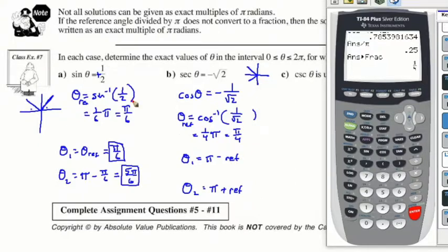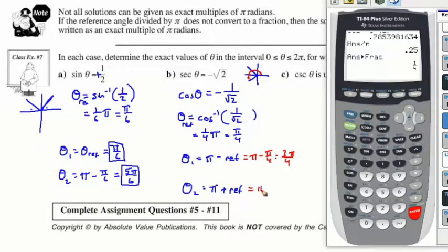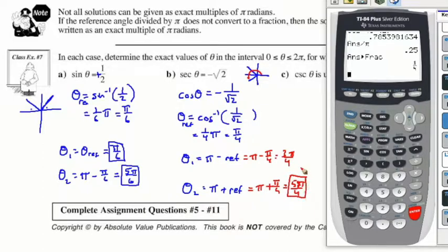Now filling in: the first angle is pi minus pi over 4, which equals 3 pi over 4. The second angle, in quadrant 3, is pi plus pi over 4, which equals 4 pi over 4 plus pi over 4, giving 5 pi over 4. So those are the two answers.